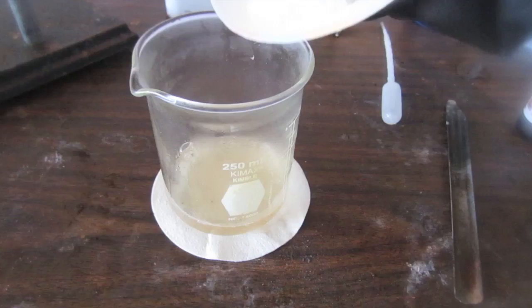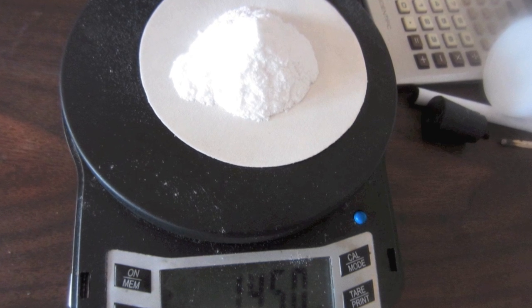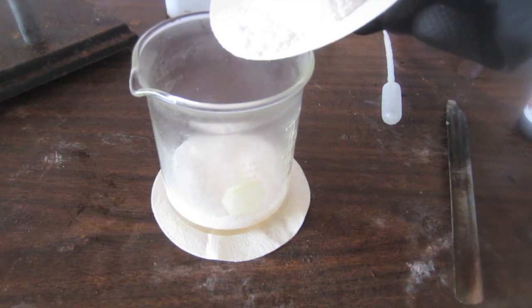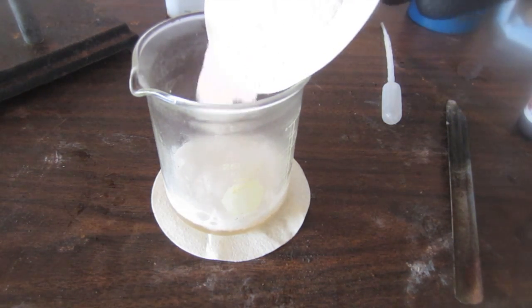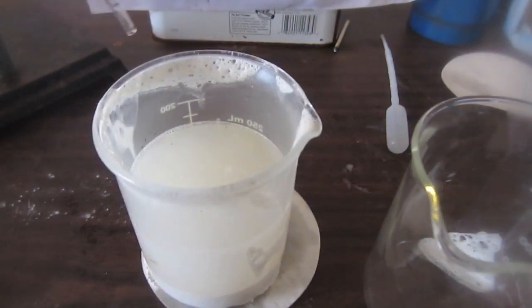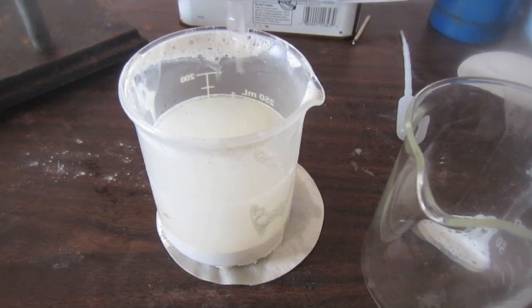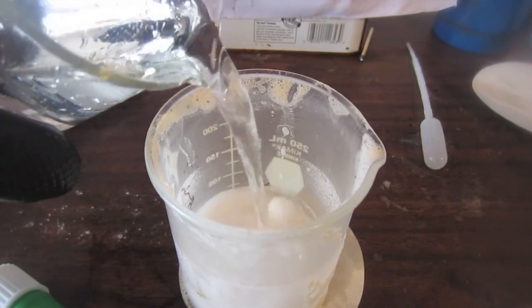After all the manganese has reacted, the solution will become a nice pleasant pink color. At this point you want to get the manganese out of solution into something insoluble, so you need to react it with 14.5 grams of sodium hydrogen carbonate, which will make the insoluble manganese carbonate. Let the precipitate settle and decant off the liquid on top and wash it several times with water.